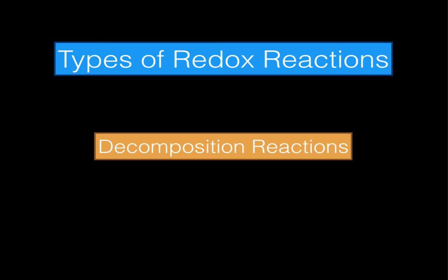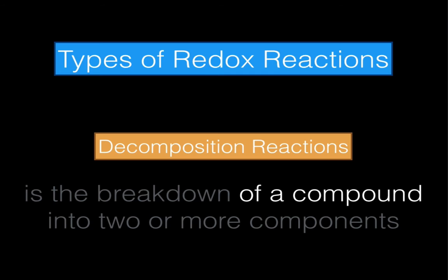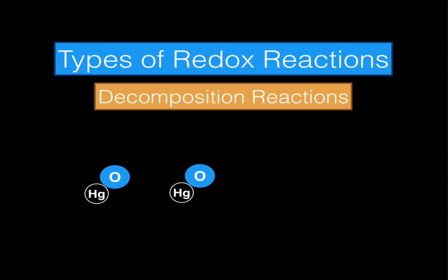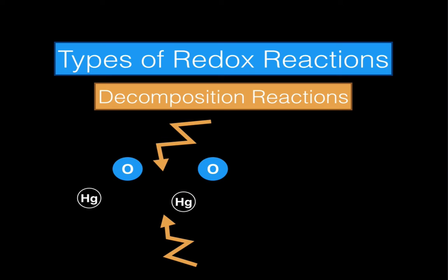Now let's take a look at decomposition reactions. This is a breakdown of a compound into two or more components. If we compare it to our previous reaction — a combination reaction — you'll notice that on the reactant side, we start off with two separate elements, a reaction occurs, and those two separate elements combine to form a brand new compound. Well, in a decomposition reaction, it's the opposite: we start off with a compound, a reaction occurs, and then that compound separates into its constituent elements. Here we have mercury oxide — mercury Hg combined with an oxygen atom. We add energy to this combination, so much energy that they actually begin to separate and decompose into their constituent parts.